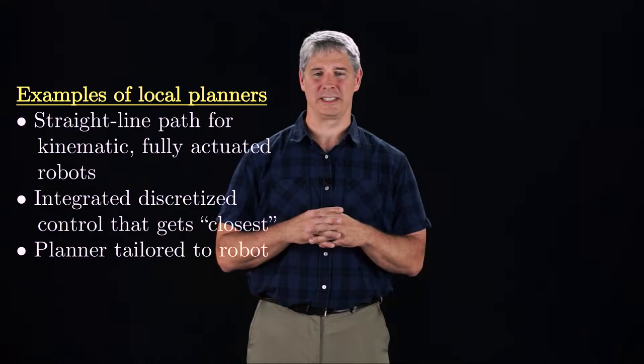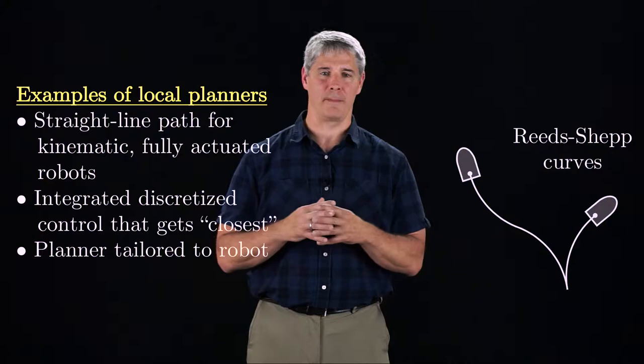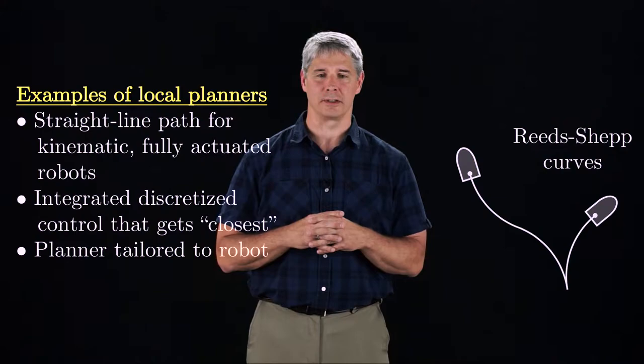Finally, we could use a local planner specifically tailored to the robot. For a car-like robot, Reeds-Shepp curves are paths that minimize the path length between two configurations without considering obstacles. Reeds-Shepp curves are good candidates for local plans.